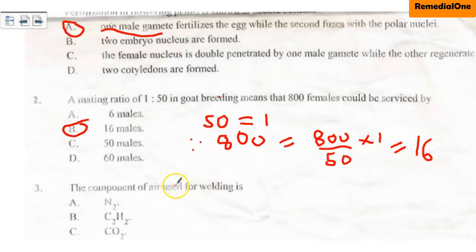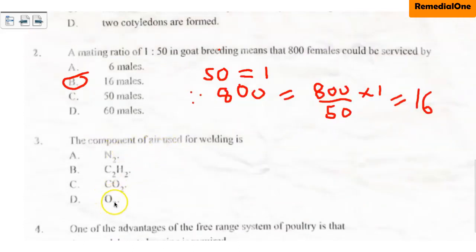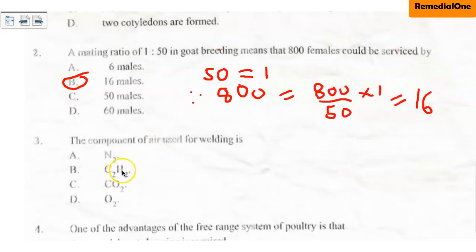Question three: the component of air used for welding is A. N2 (nitrogen gas), B. C2H2 (ethylene gas), C. CO2 (carbon dioxide gas), D. O2 (oxygen gas). The welding flame is made up of oxy-ethylene flame, a mixture of oxygen and ethylene. But the question asks for the component found in air. We don't have ethylene in air, but we do have oxygen. Therefore, the correct option is option D — oxygen gas, O2.